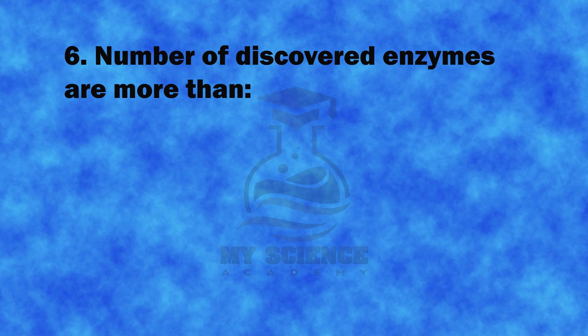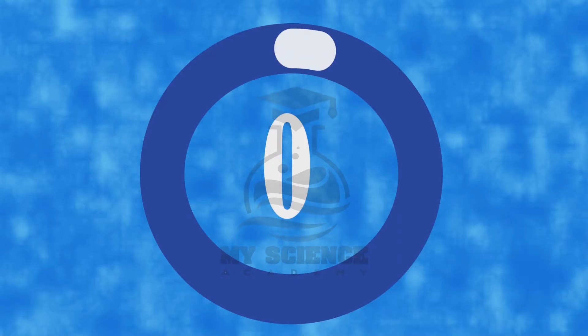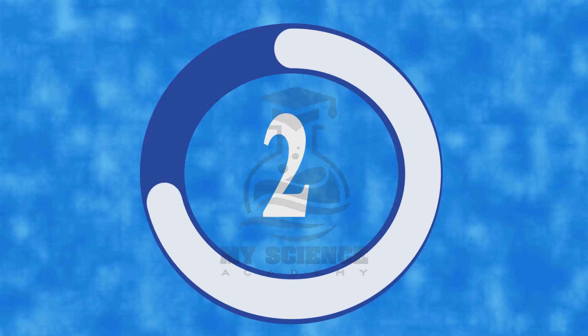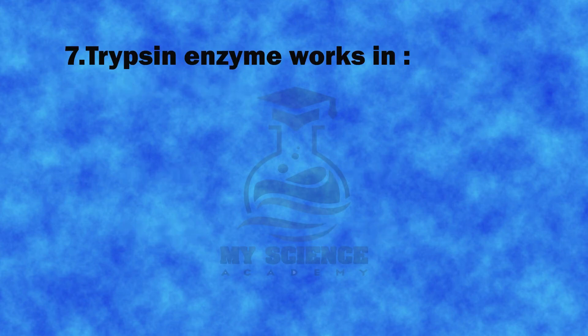Question 6: Number of discovered enzymes are more than: A. 200, B. 3000, C. 2000, or D. 3500. The correct answer is C. 2000.